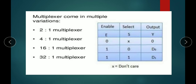Multiplexers come in multiple variations: 2-to-1 multiplexer, 4-to-1 multiplexer, 16-to-1, and 32-to-1. The first number decides the number of inputs. So 2-to-1 has two inputs and one output, 4-to-1 has four inputs and one output, 16-to-1 has 16 inputs and one output, and 32-to-1 has 32 inputs and one output.